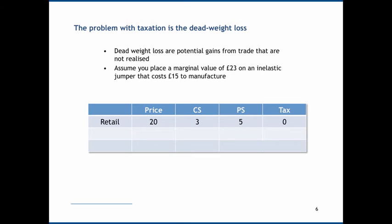Deadweight loss are potential gains from trade that are not realised. For example: imagine you value a jumper at £23 — the maximum you're willing to pay — and it costs £15 to manufacture. Without taxes, with a retail price of £20, there's £3 of consumer surplus, £5 of producer surplus, and zero tax revenue. Introducing a 10% tax raises the price to £22, so consumer surplus falls from £3 to £1, producer surplus falls, and tax revenue is £2.